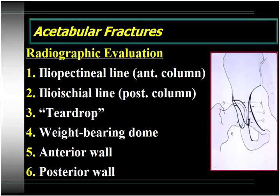It's very important that you understand these radiographic landmarks for the acetabulum. Line one, illustrated here, is the iliopectineal line, which is the radiographic landmark for the anterior column of the acetabulum. Line two, which begins up here and comes down into the obturator foramen, is the ilioischial line, which is the radiographic landmark for the posterior column.